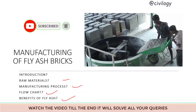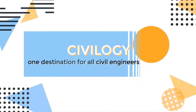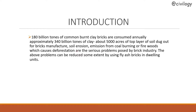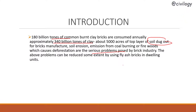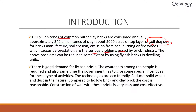We use 180 billion tons of common burnt clays, that is approximately 340 billion tons of clay. About 5,000 acres of top layer soil is dug out for manufacturing purposes. Soil erosion, emissions from coal burning, and burning of firewood cause deforestation and serious problems posed by the brick industry. These problems can be reduced to some extent when you use fly ash bricks.